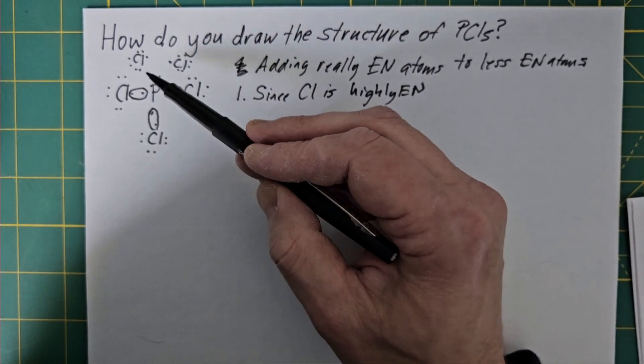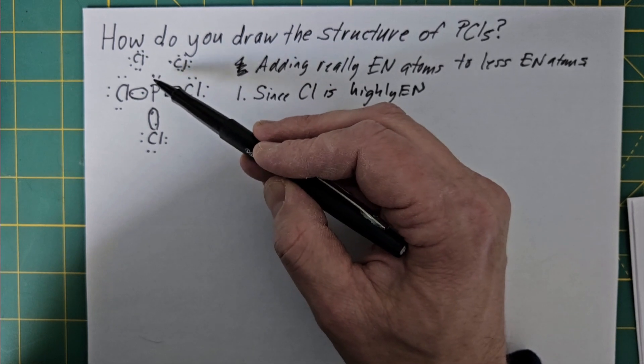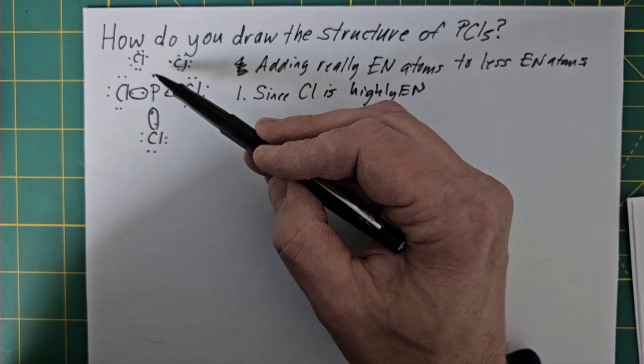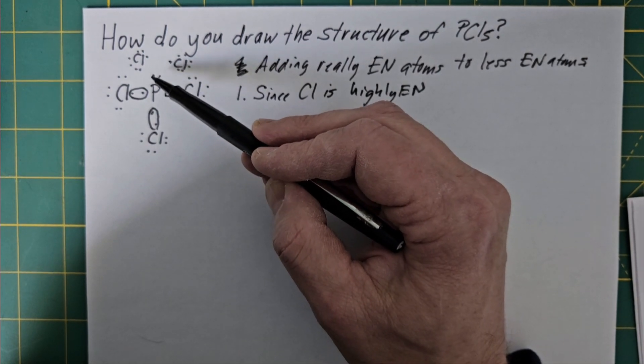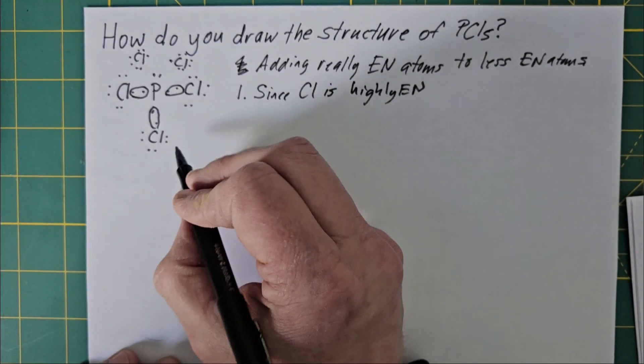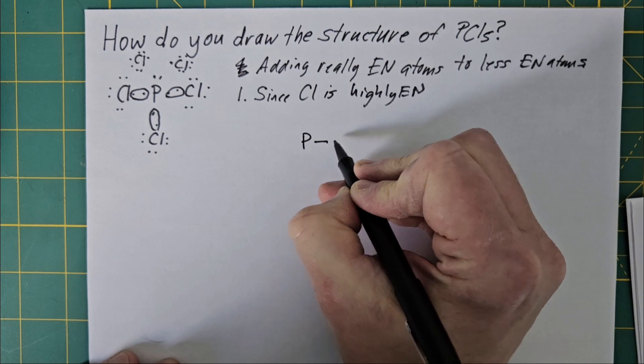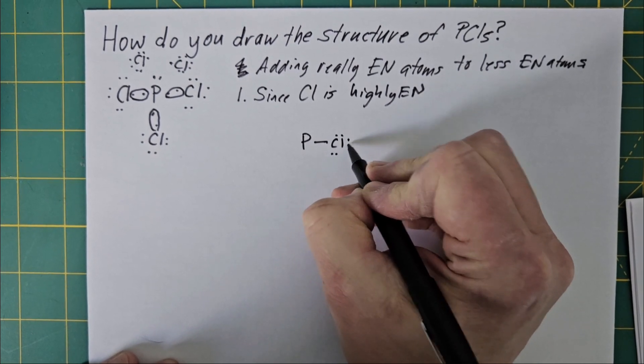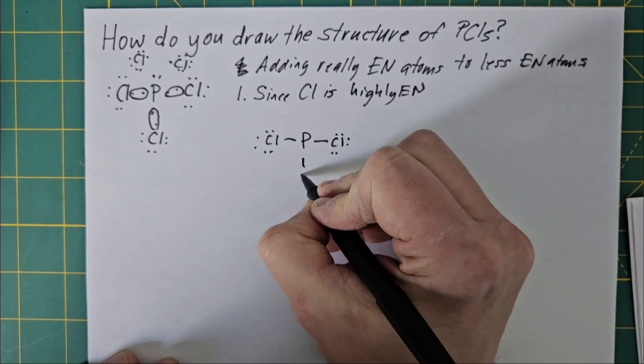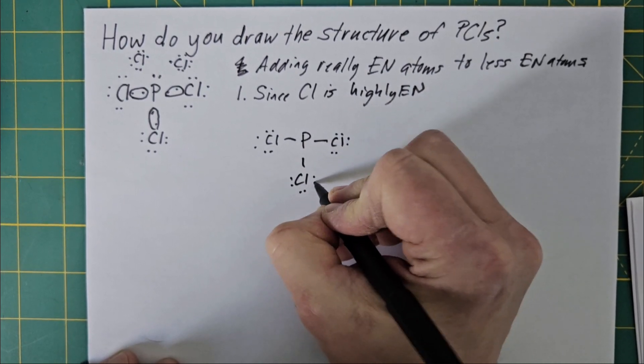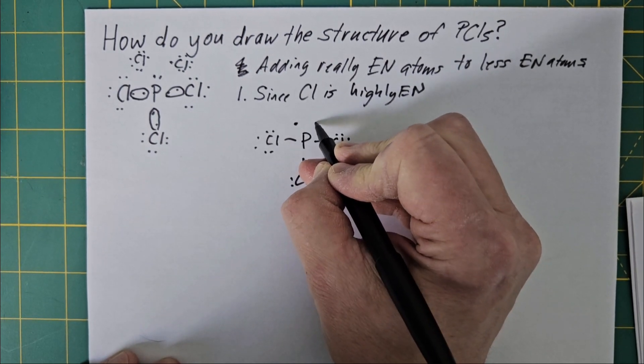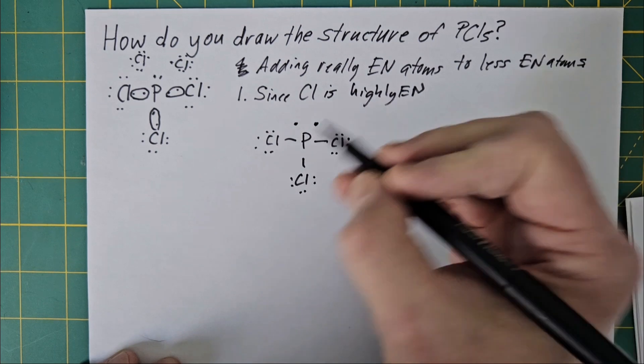So chlorine still attracts electrons, and it attracts electrons so strongly that these electrons get pulled apart so they're no longer in the same orbital. They're in two different orbitals. Instead of having a nonbinding pair of electrons in one orbital, you have two lone pairs in individual orbitals.